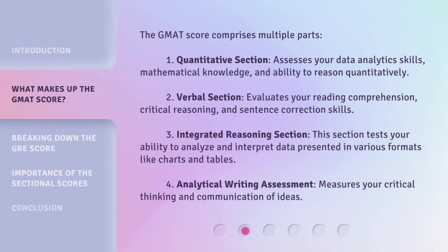The GMAT score comprises multiple parts. 1. Quantitative Section: Assesses your data analytics skills, mathematical knowledge, and ability to reason quantitatively. 2. Verbal Section: Evaluates your reading comprehension, critical reasoning, and sentence correction skills. 3. Integrated Reasoning Section: This section tests your ability to analyze and interpret data presented in various formats like charts and tables. 4. Analytical Writing Assessment: Measures your critical thinking and communication of ideas.